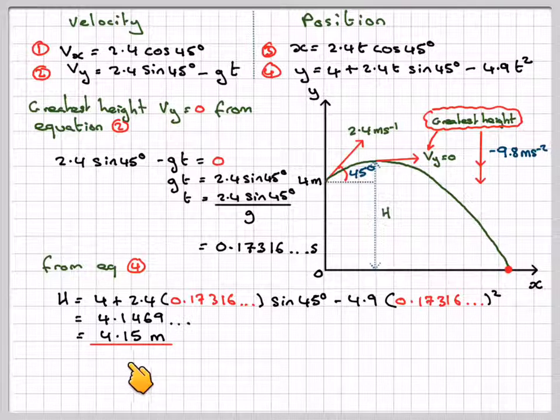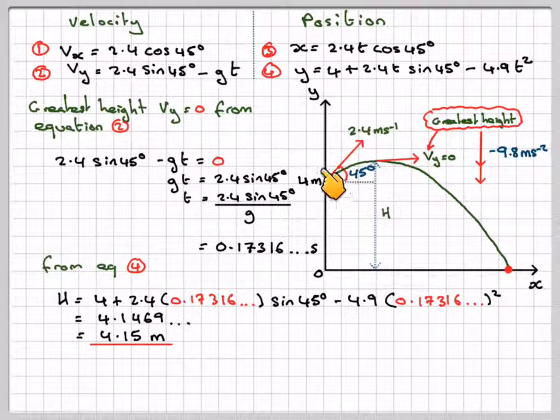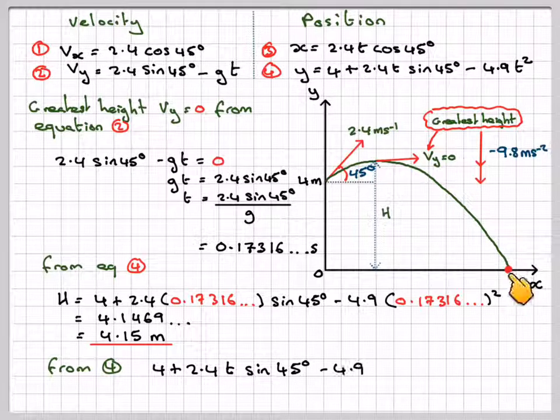That gives me 4.146869, which gives me 4.15 metres. Okay, which is above the initial height.